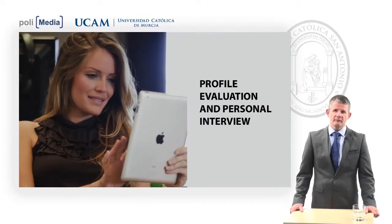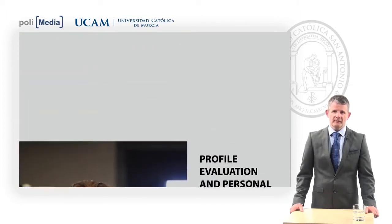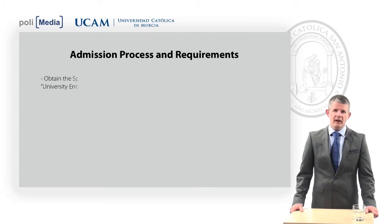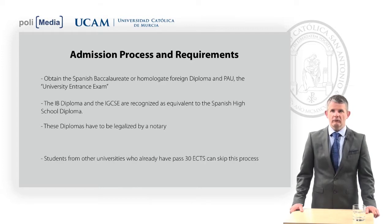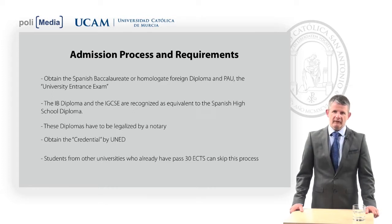Before anything, it is important to note that to access undergraduate degrees in Spain, it is necessary to have a Spanish Baccalaureate, or to homologate foreign diplomas through the Spanish Ministry of Education, and then have the PAO, the University Entrance Exam. If needed, students may attend here at UCAM a preparatory course focused on this national entrance test.